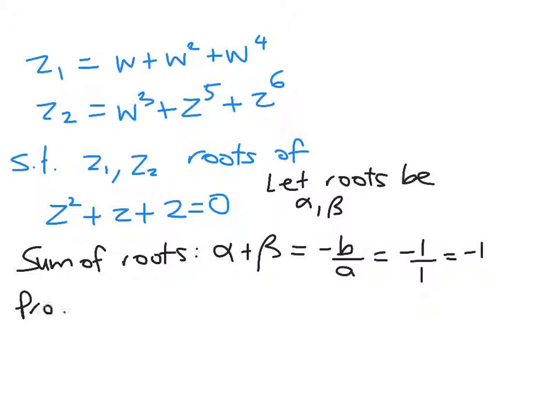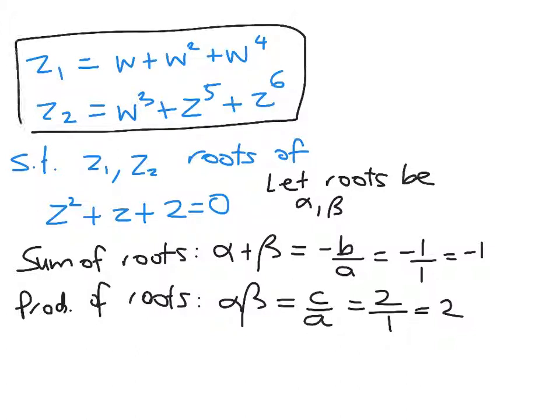And the product of the roots, α·β, is equal to c/a which in this case is 2/1 which is just 2. So what we're going to do now is to work out the sum and product here using z₁ and z₂ and show that they satisfy those conditions.